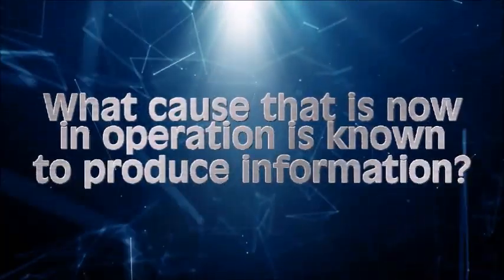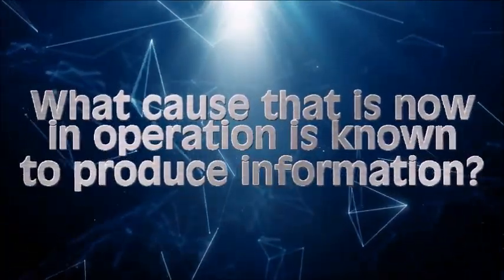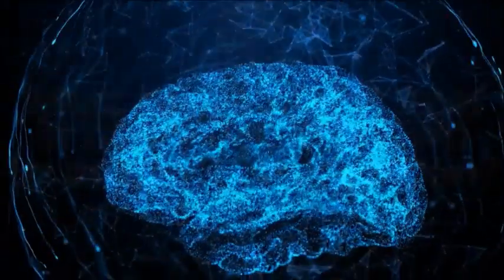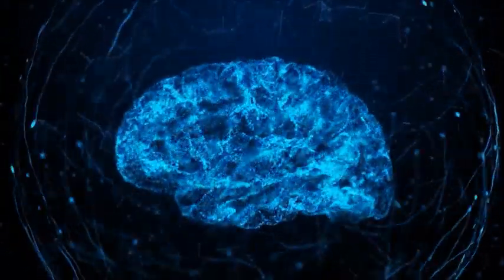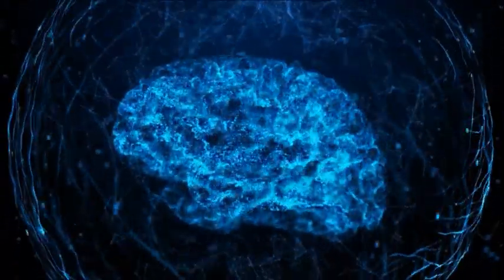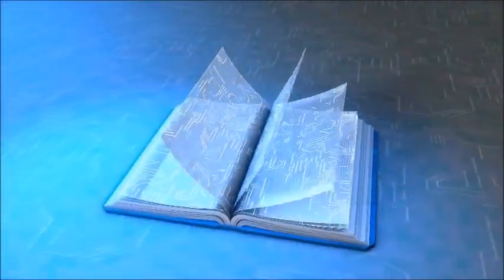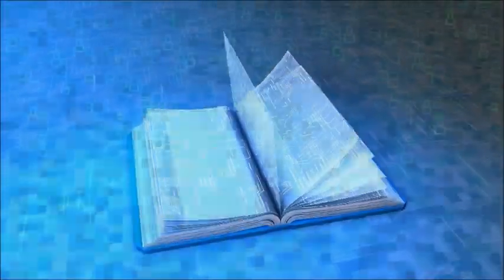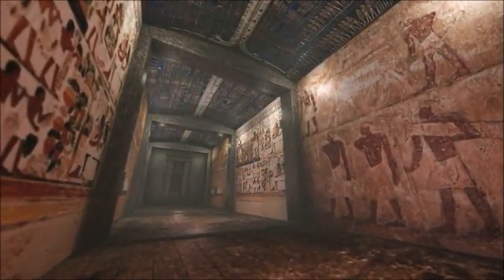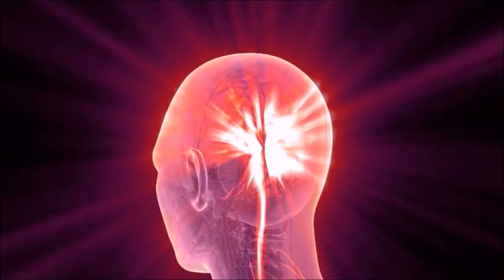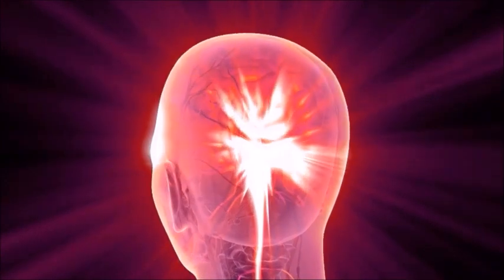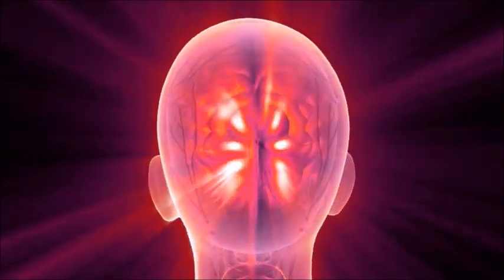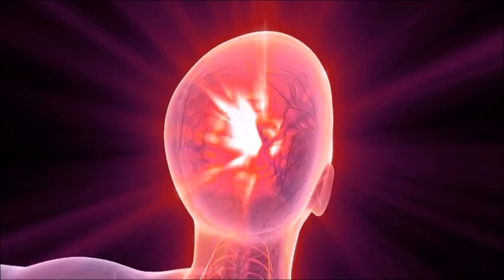So what cause that is currently in operation is known to produce information? There is only one known source of information, and that is intelligence. Think of all the types of information we encounter, whether it is text in a book, or computer code, or hieroglyphics. When we encounter information and trace it back to its source, we always come to an intelligent mind. Therefore we know that intelligence has the causal adequacy to explain the origin of life.